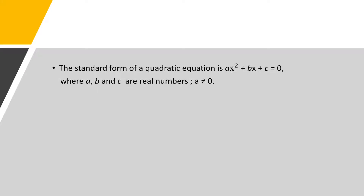Let us know something more about quadratic equations. The standard form of a quadratic equation is ax squared plus bx plus c equal to 0, where a, b, and c are real numbers. One important thing to note is that a cannot be equal to 0.